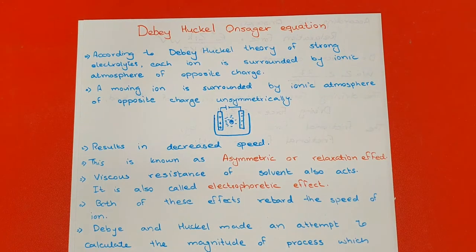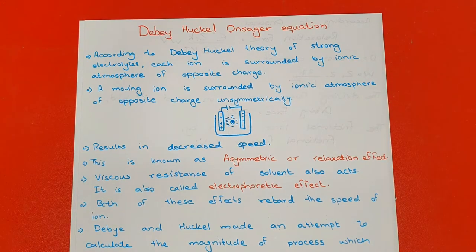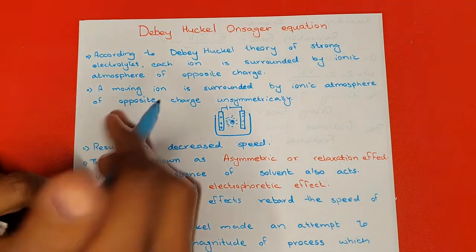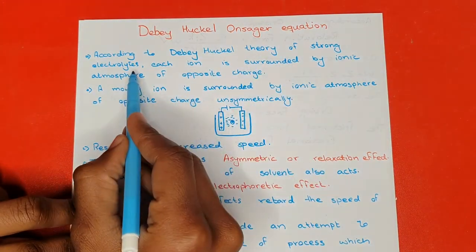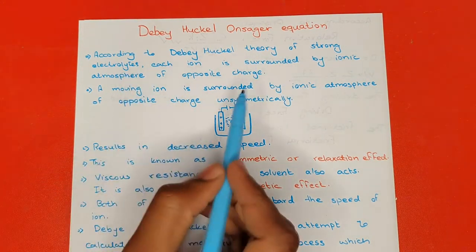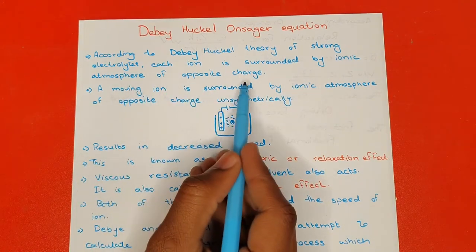The topic of today's video is the Debye-Hückel-Onsager equation. In this video I am going to derive the Debye-Hückel-Onsager equation. According to Debye-Hückel theory of strong electrolytes, each ion is surrounded by an ionic atmosphere of opposite charge.